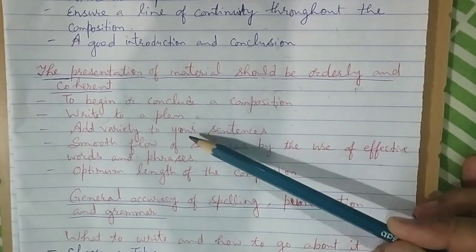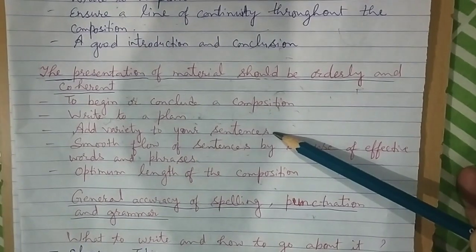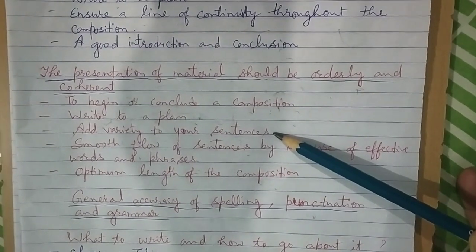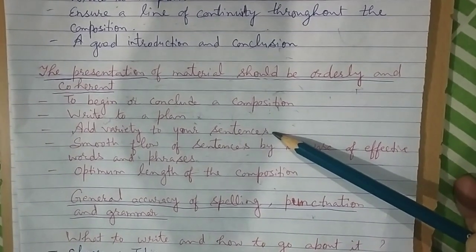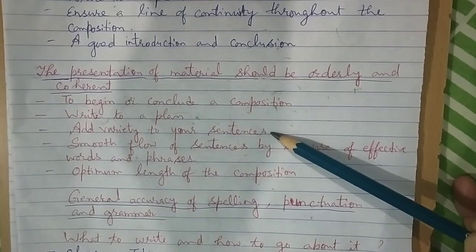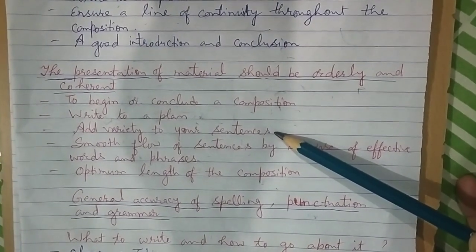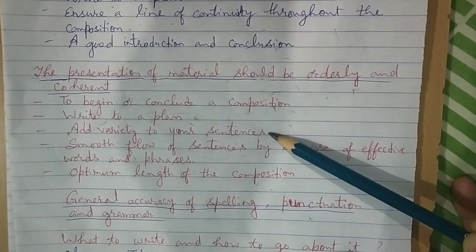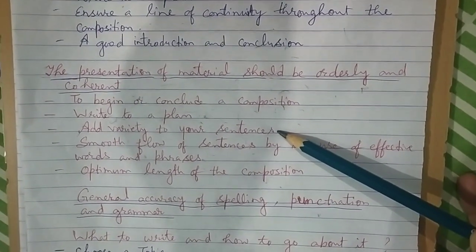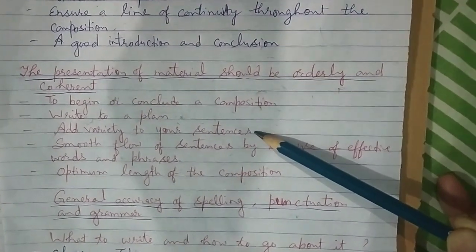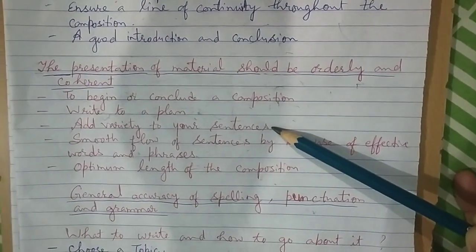Next is to add variety to your sentences. Short, monotonous sentences make the composition dull. It is important to vary the pattern of the sentences to make them expressive and lively. For example: 'He went to sleep after returning home from office.' This can be rewritten as 'On returning home from office, he went to sleep.' Or 'Having returned from office, he went to sleep.'